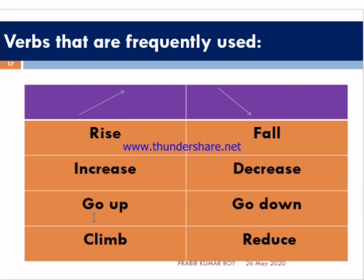There are some words that are frequently used in graph, chart, and map descriptions. If the data increases, you can say 'rise,' 'increase,' 'go up,' or 'climb.' If it falls down, then you can say 'fall,' 'decrease,' 'go down,' or 'reduce.'